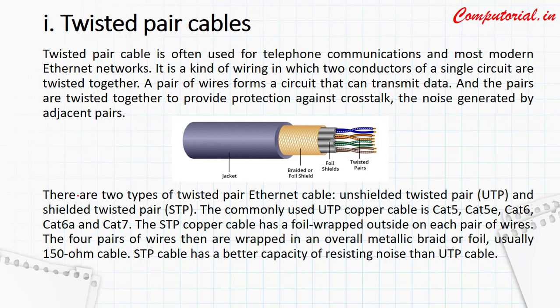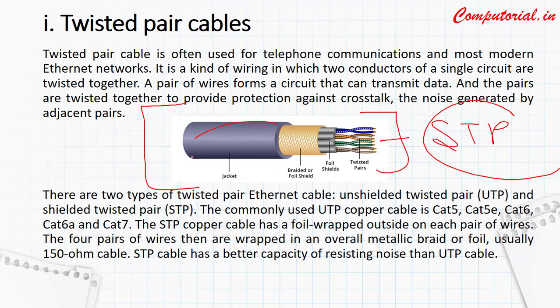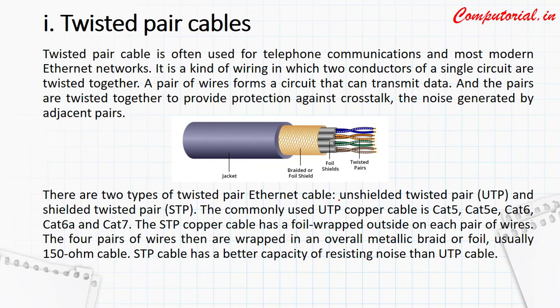The most important thing is that twisted pair cables are of two types. The image you can see here is the STP — shielded twisted pair — because it has a jacket or covering around each pair. But we also have cables without this protection, which are termed as unshielded twisted pair. So twisted pair cables are two types: UTP (unshielded twisted pair) and STP (shielded twisted pair).